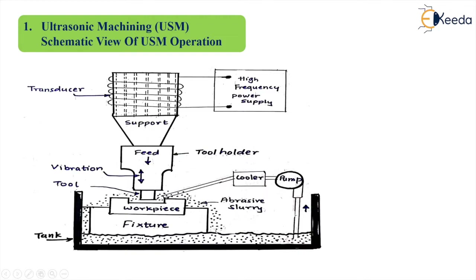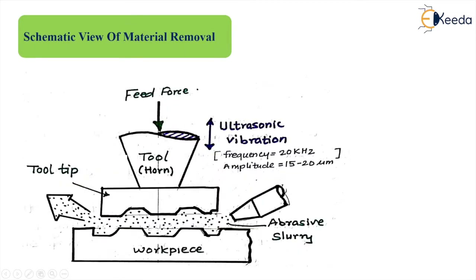Let us see how material is actually removed in the ultrasonic machining process. The tool, also known as the horn, faces the workpiece with a small gap at the tip. In that gap we provide the abrasive slurry. As the tool vibrates with ultrasonic vibrations — normally the frequency is around 20 kilohertz and the amplitude ranges from 50 to 20 microns — the tool is also given a constant feed force.